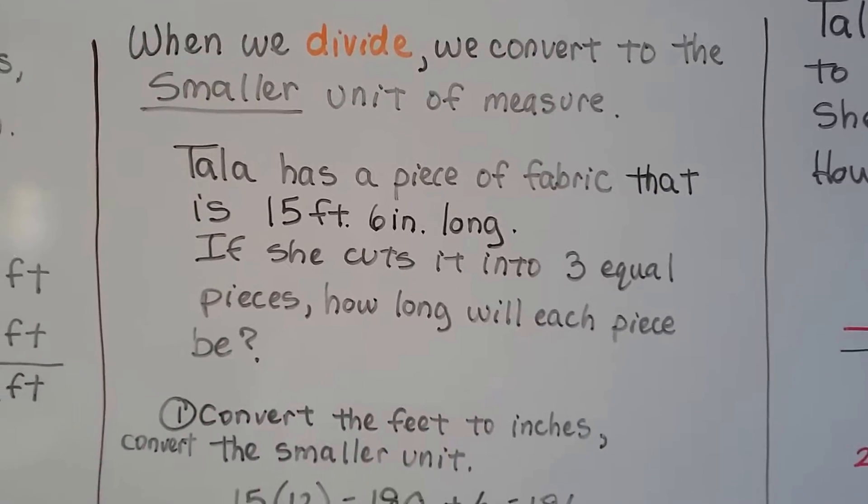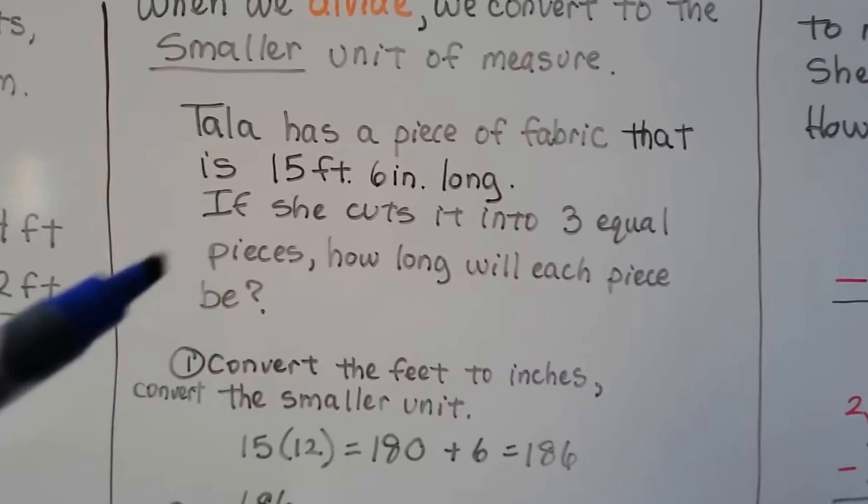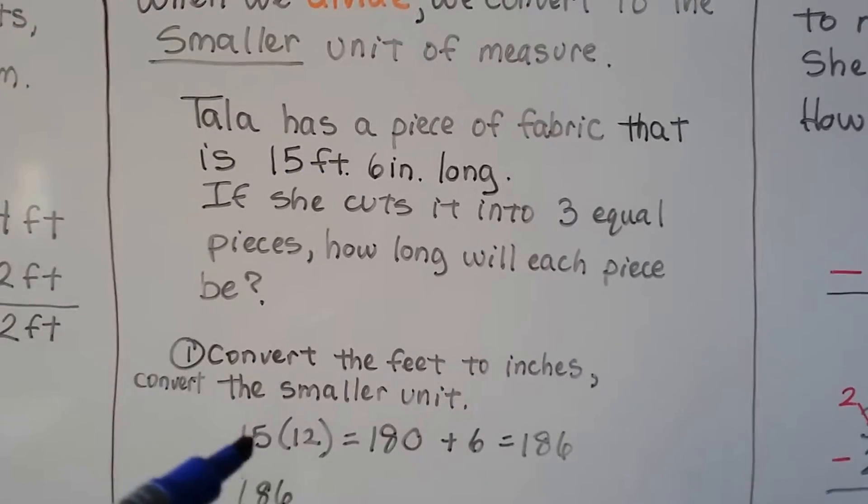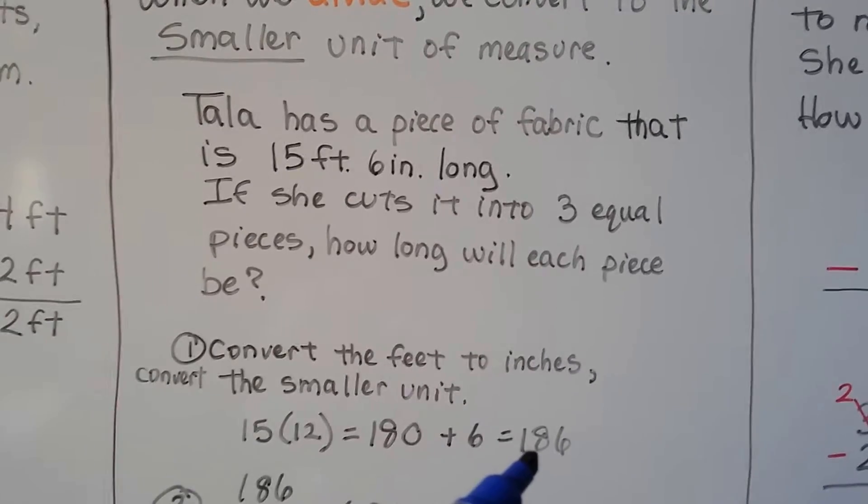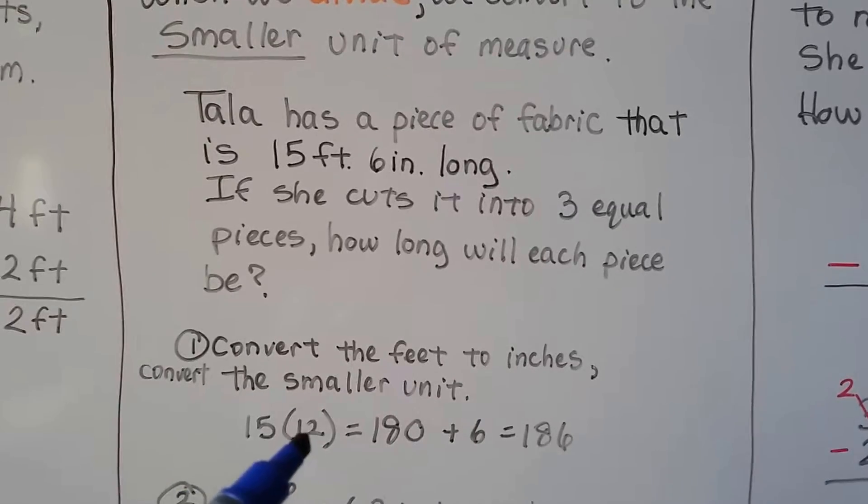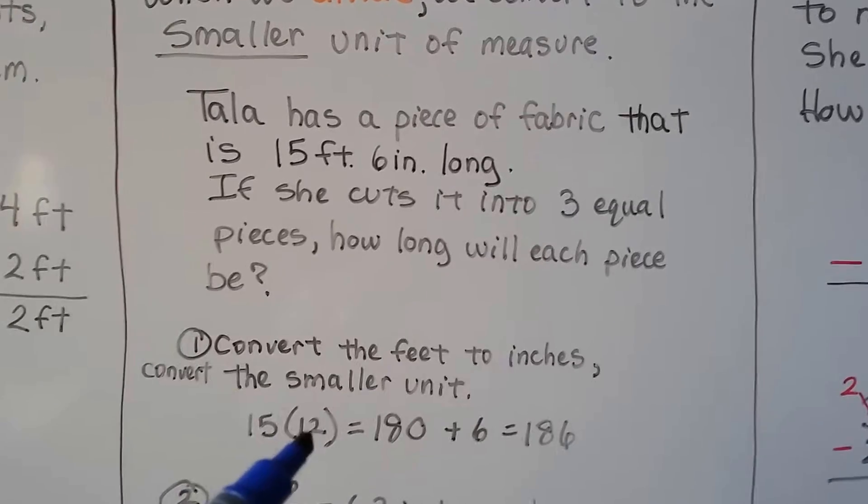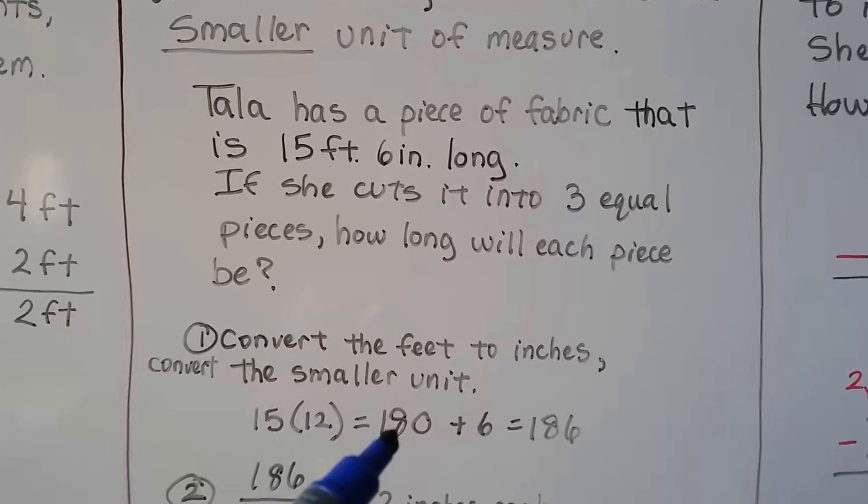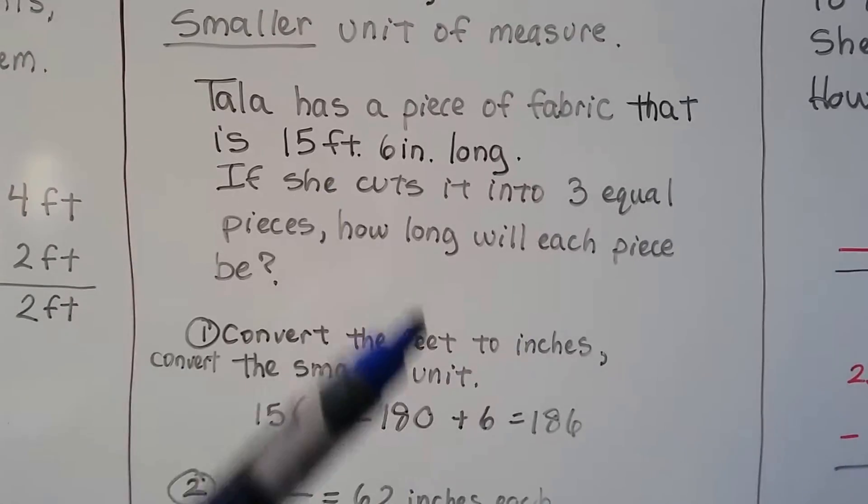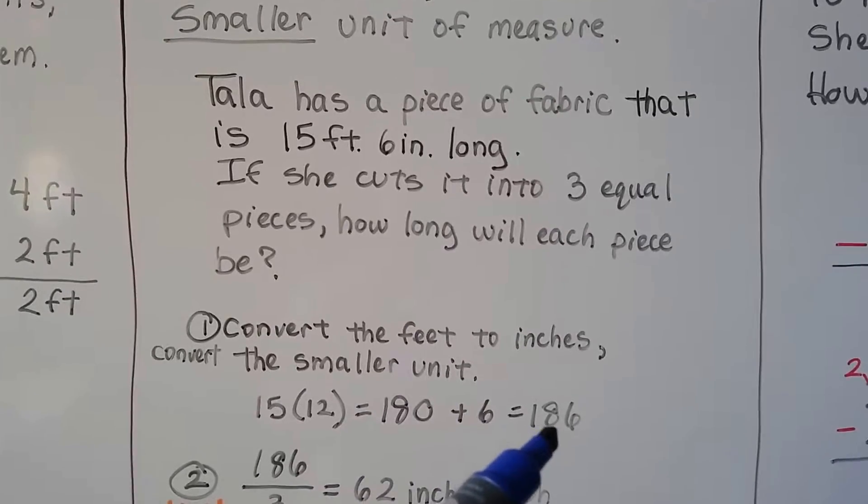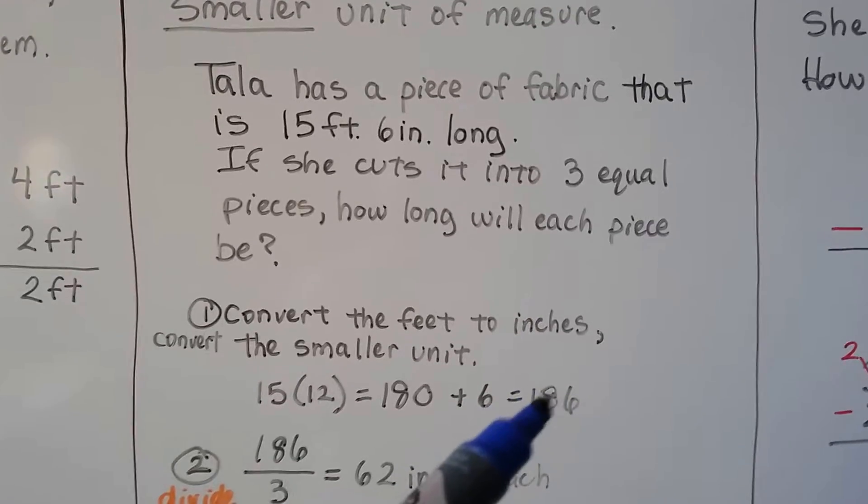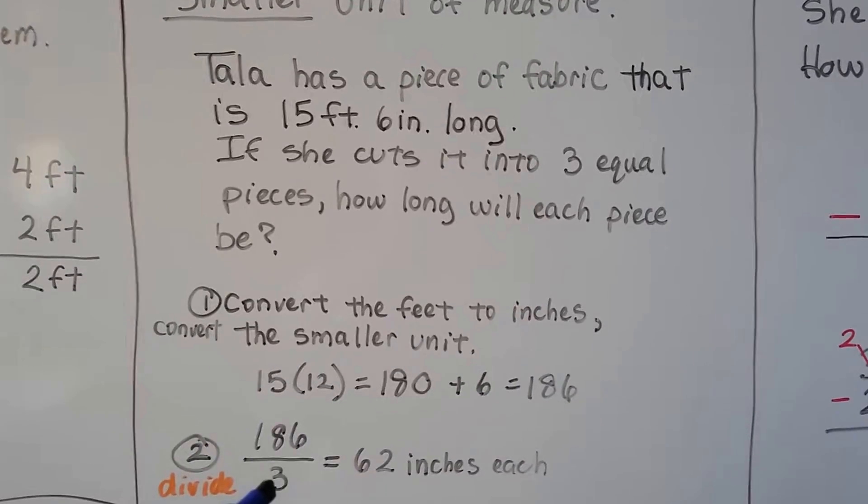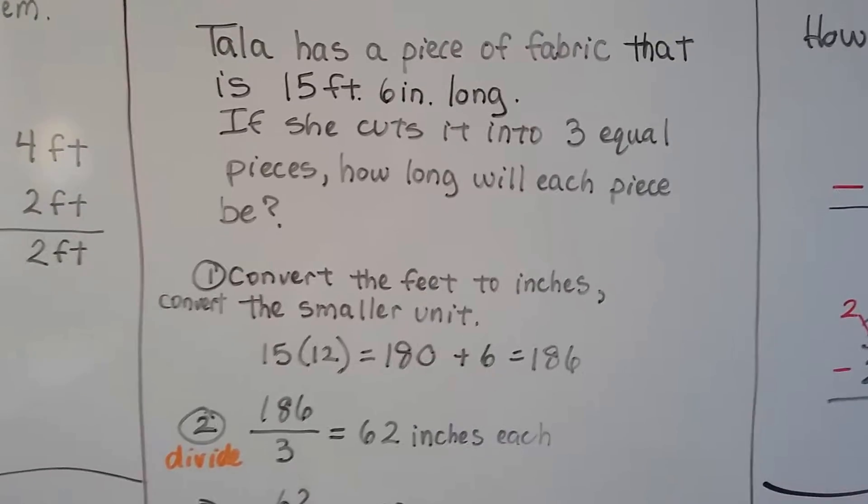We can convert the feet to inches. So the 15 feet 6 inches is going to end up being 186 inches. We do 15 times 12 because there's 12 inches in a foot. We have 15 of them. That's going to give us 180. Then we add the 6 inches to it and we have 186.